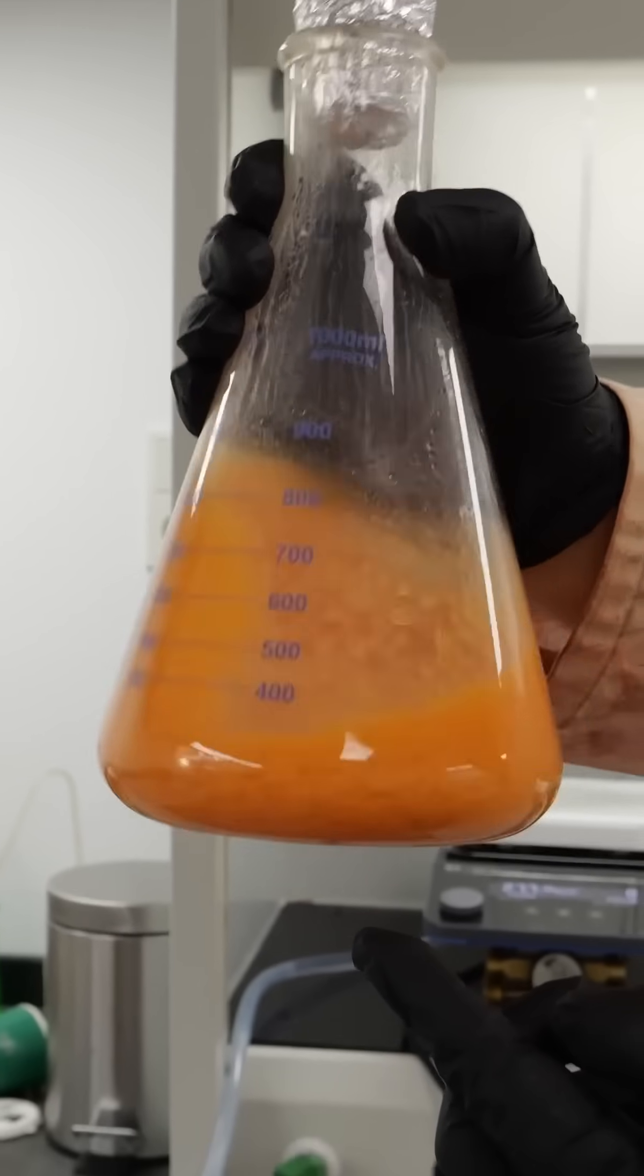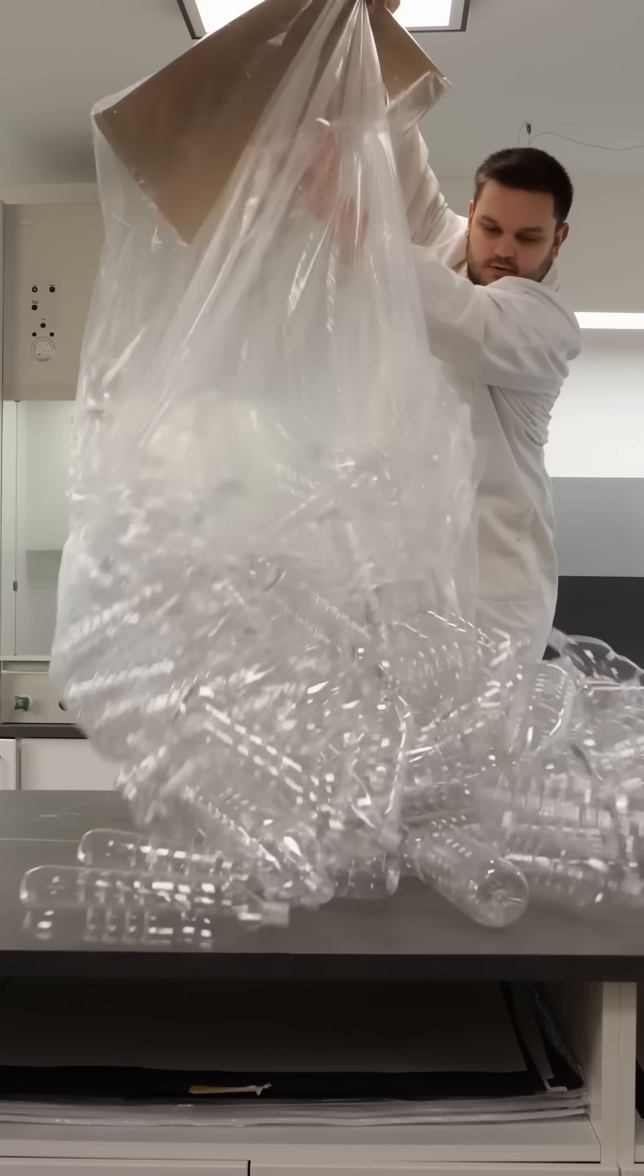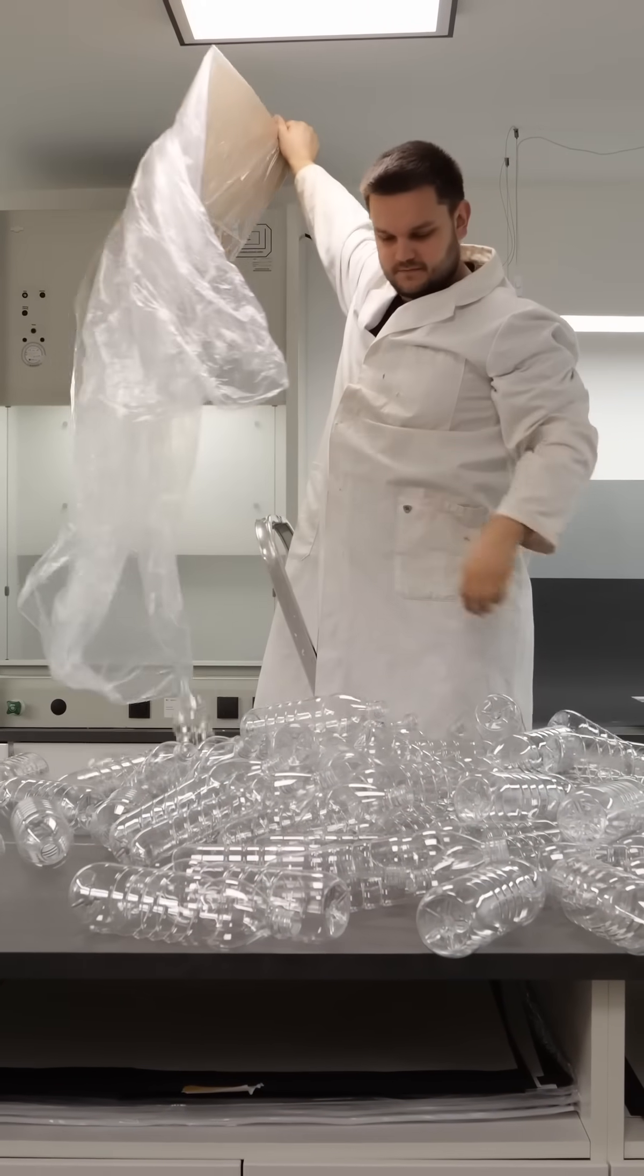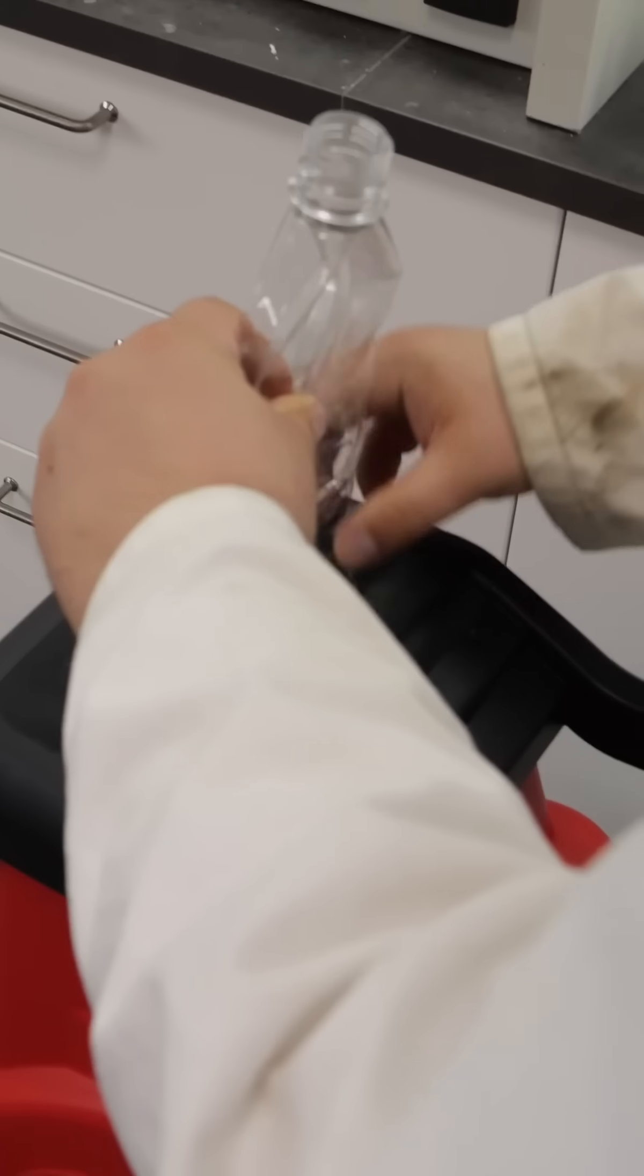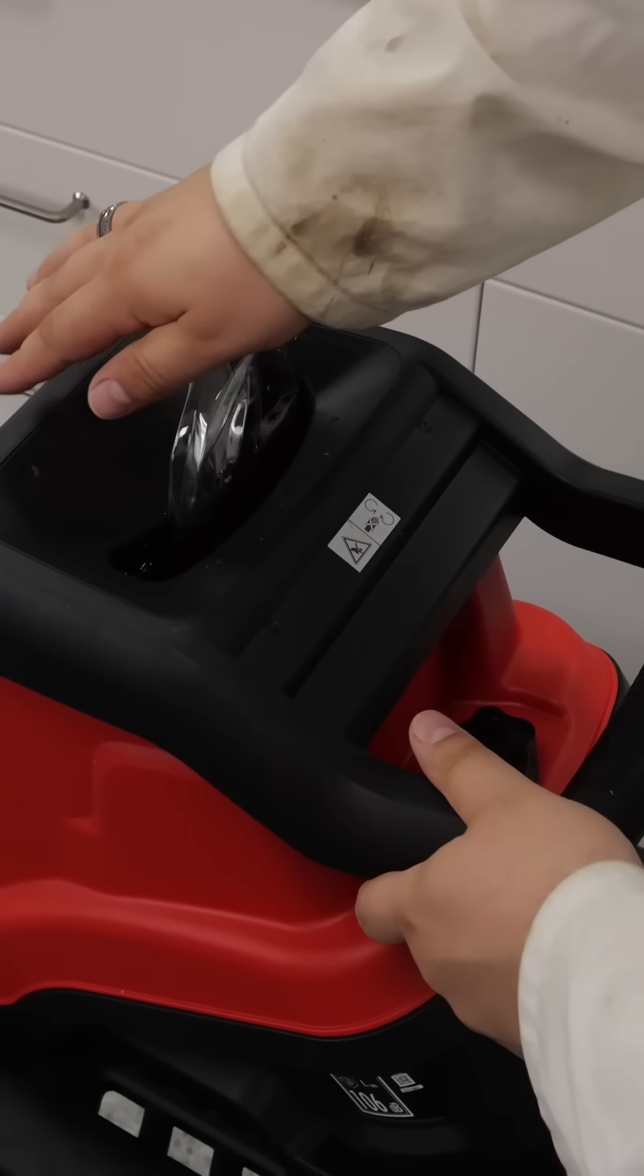I produced gasoline from deposit bottles and used it to operate a chainsaw. For that, a whole bunch of deposit bottles first have to be run through a shredder. Most deposit bottles are made of PET, a type of plastic whose roots initially lie in crude oil.